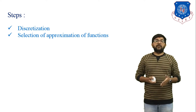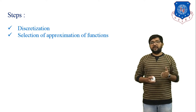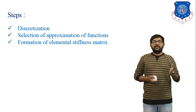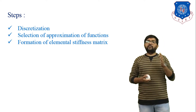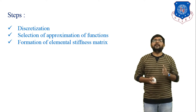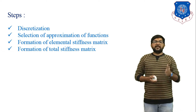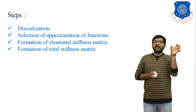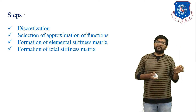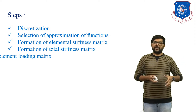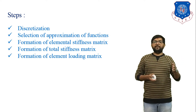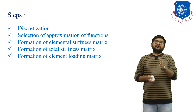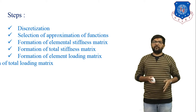The second step is selection of approximation function, meaning we have to define the function of that object. The next step is formation of the element stiffness matrix. Stiffness means force per unit deflection. Next is formation of the total stiffness matrix — we solve each element, derive a stiffness matrix for each, and then combine all the stiffness matrices. Formation of element loading matrix means whatever load we apply on an element, we derive a load vector for that.